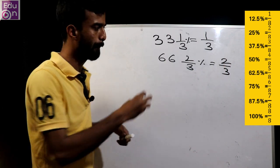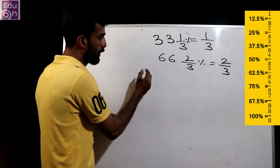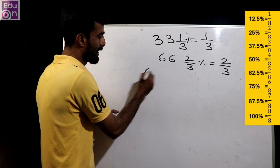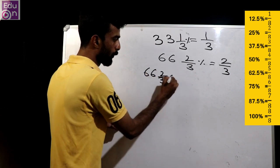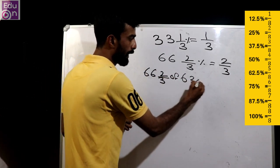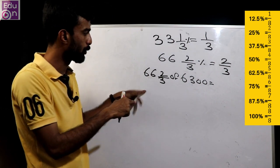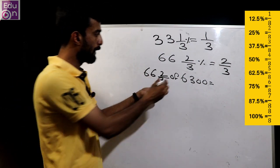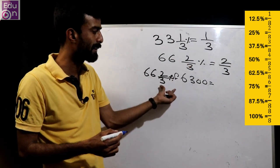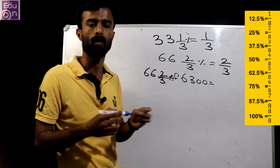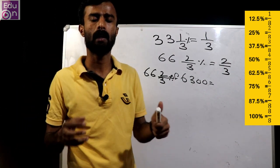2 by 3 of 6,300. We use this percentage: 2 by 3 of 6,300.